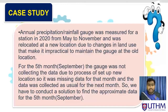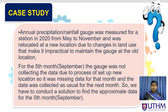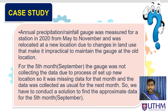Our case study involves annual precipitation data where the rainfall gauge was measured for the station in 2020 from May to November. Three months were located at a new location due to a change in land use that made it impractical to maintain the gauge at the old location. For the fifth month, September, the gauge was not collecting data due to the process of setting up new locations, so the missing data for that month needs to be estimated. We conducted a solution to find the missing precipitation data for September.